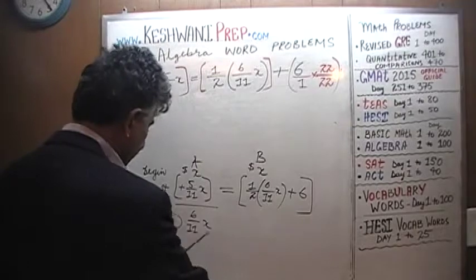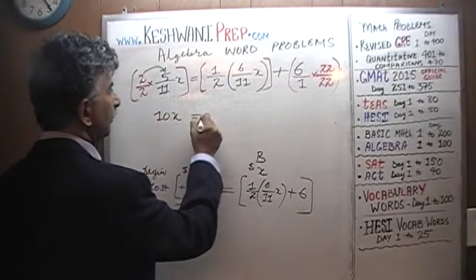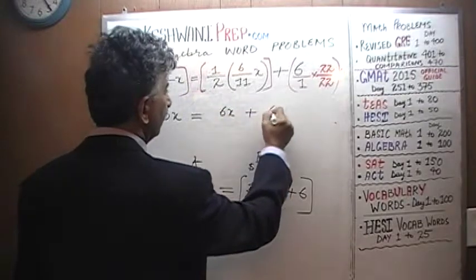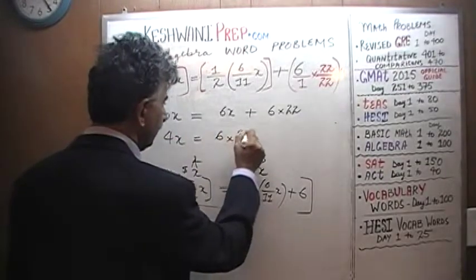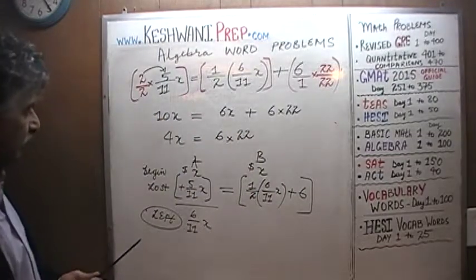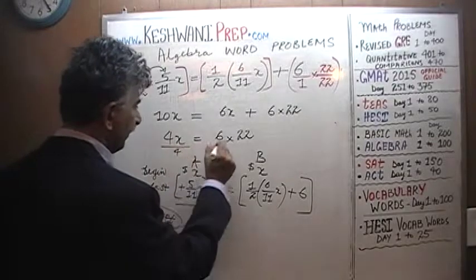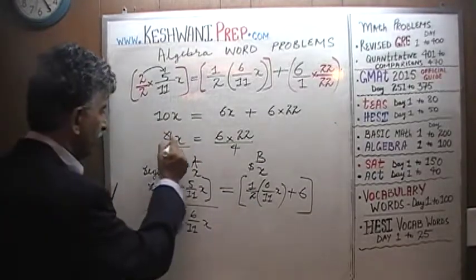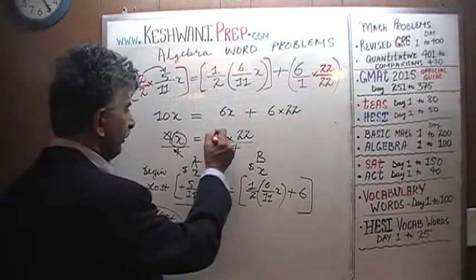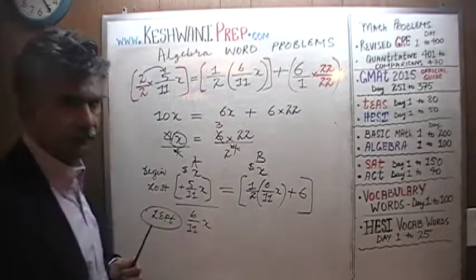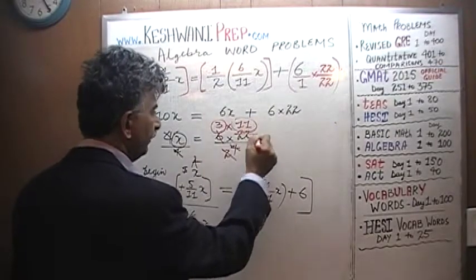We can ignore the denominator and focus on the numerators. We have 2 × 5x = 10x on the left, and 6 × 1 = 6x plus 6 × 22 on the right. So the equation is 10x = 6x + 132. Subtract 6x from both sides: 4x = 132. Divide both sides by 4: x = 6 × 22 over 4. Dividing top and bottom by 2 gives 3 × 11, which is 33.